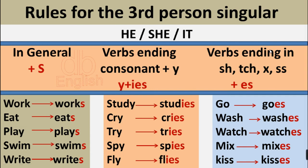Verbs ending in SH, TCH, X, or SS: add ES. For example: go → goes, wash → washes, watch → watches, mix → mixes, case → cases.